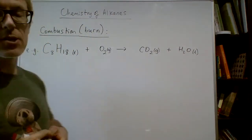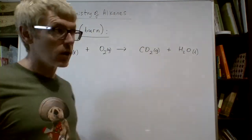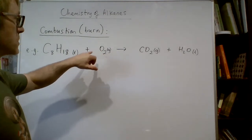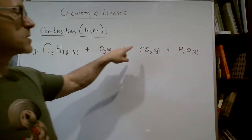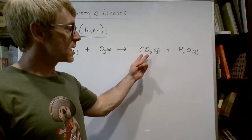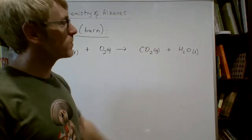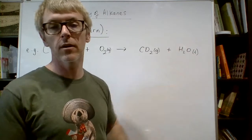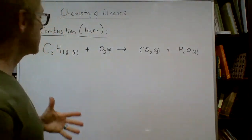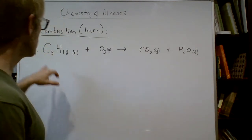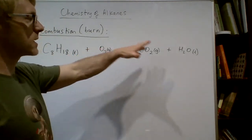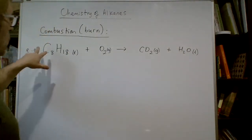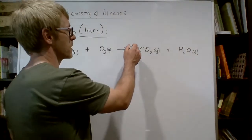Combustion essentially means adding oxygen atoms to everything that's not already oxygen. If I've got a hydrocarbon - a mixture of carbon and hydrogen - and I add oxygen to carbon, I make carbon dioxide in the one-to-two proportion. If I add oxygen to hydrogen, I make water in the two-to-one proportion. Now I need to balance this equation: we have eight carbons, so I put a coefficient of eight in front of CO2.